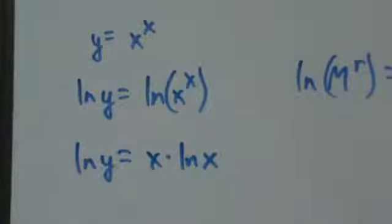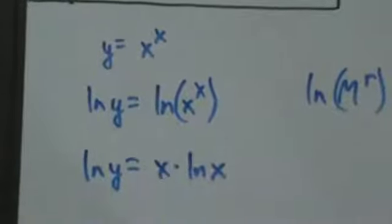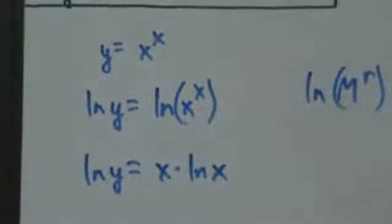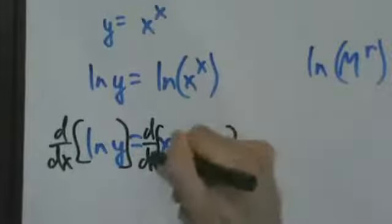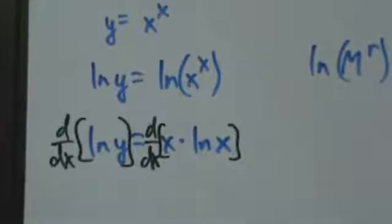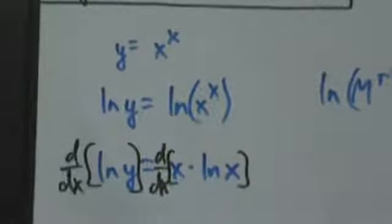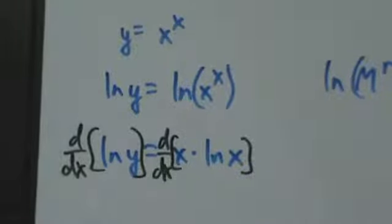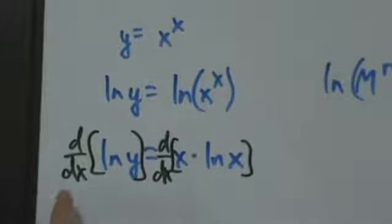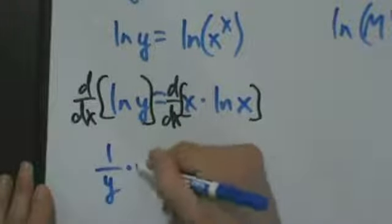Now we take the derivative of both sides — that's why it's called logarithmic differentiation: you take a log of both sides, simplify using that rule, and then take a derivative. So d/dx of the left equals d/dx of the right. On the left, it's similar to implicit differentiation. Using the chain rule, the derivative of natural log of a thing is one over that thing times the derivative of that thing.